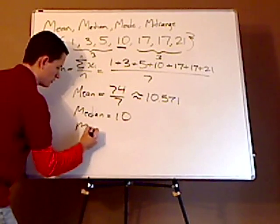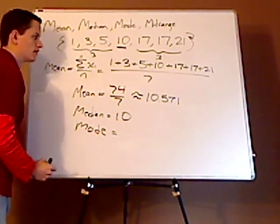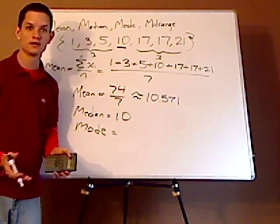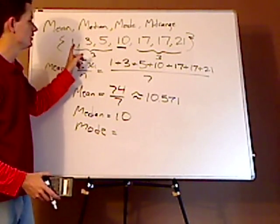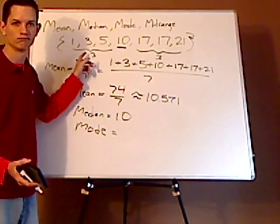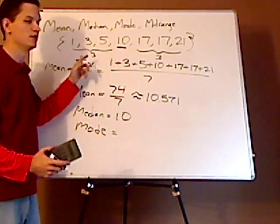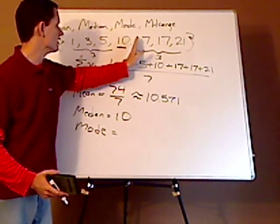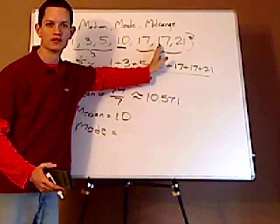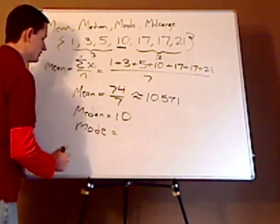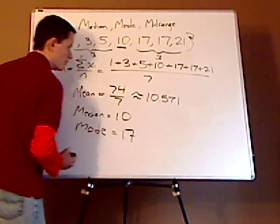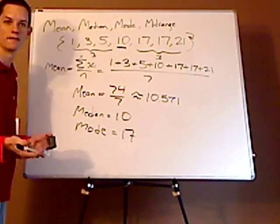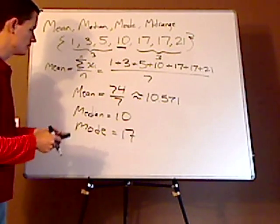Mode. Just think of the one that's most frequent that you see. Now, sometimes there could be a tie, and sometimes there could be no mode. Notice here, the 17 repeats twice. So that means 17 is the mode, because it appears most often. That's what mode is.